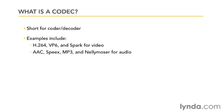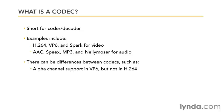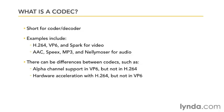There can be other differences in codecs as well. For example, VP6 supports an alpha channel for video transparency, where H.264 does not, but you can take advantage of hardware acceleration with H.264, not so with VP6. Since HDS and HLS streaming only work with videos that use H.264 for video and AAC for audio, that's what we'll use for all of the video examples in this course.